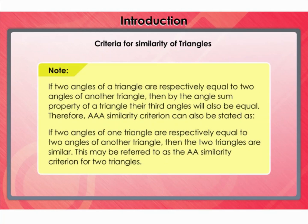Note: If two angles of a triangle are respectively equal to two angles of another triangle, then by the angle sum property of a triangle, the third angles will also be equal. Therefore, the AAA similarity criterion can also be stated as: if two angles of one triangle are respectively equal to two angles of another triangle, then the two triangles are similar. This may be referred to as the AA similarity criterion for two triangles.